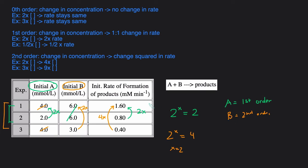Now that we have the order of both A and B, we can write the rate law. The rate law is: rate equals the rate constant K times the concentration of A raised to the first order, times the concentration of B raised to the second order. That's the overall rate law for this reaction.